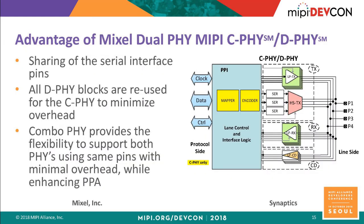The advantages of Mixell's dual-mode D-Fi/C-Fi combo PHY: first, the serial interface chip and package pins are shared — important for chip and package design. Second, all D-Fi blocks are reused in C-Fi mode with no redundancy; only a couple of extra blocks are added to support C-Fi. So the combo PHY provides flexibility while minimizing area overhead, with no additional cost for pin count — enhancing your PPA.